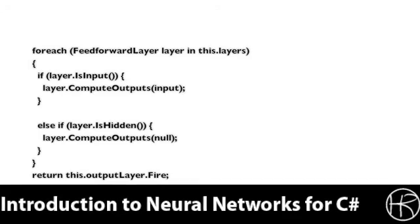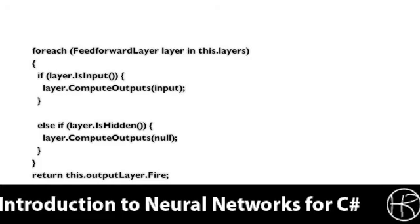For all of the hidden layers, null is passed in because the hidden layers will simply get their input from the preceding layer. The input layer has to start the whole thing.